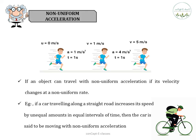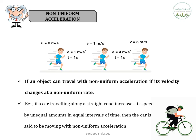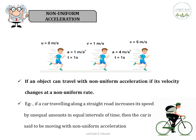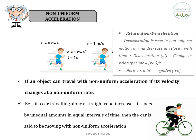The acceleration is taken as positive if it is in the direction of velocity and negative when it is opposite to the direction of velocity. If an object travels with non-uniform acceleration, its velocity changes at a non-uniform rate. For example, a car travelling along a straight road increases its speed by unequal amounts in equal intervals of time — that car is said to be in non-uniform accelerated motion. There is another term called retardation or deceleration, seen in non-uniform motion, where there is a decrease in velocity with time. It is calculated as (v − u) / t and the acceleration would be negative.